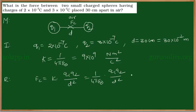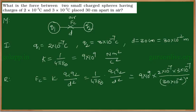So now substitute the given values: 9×10⁹ times q₁q₂, which is 2×10⁻⁷ times 3×10⁻⁷, divided by 30×10⁻² whole square. That is equal to...